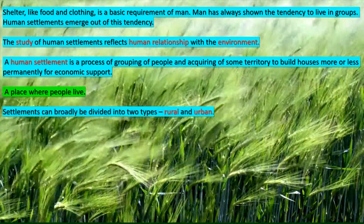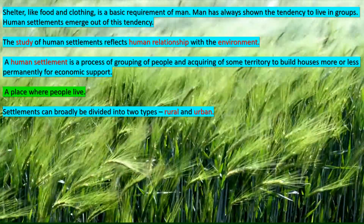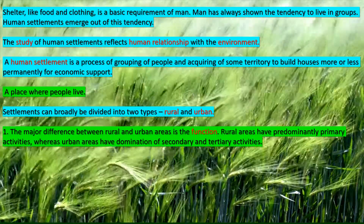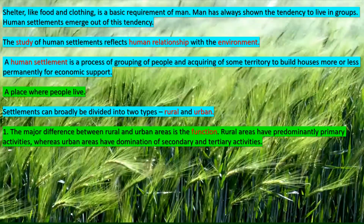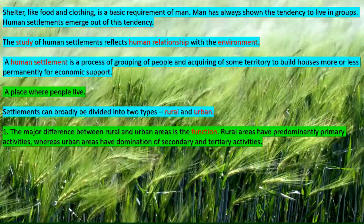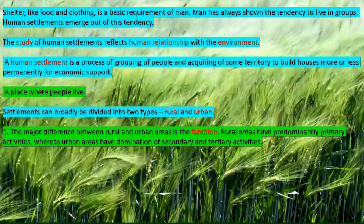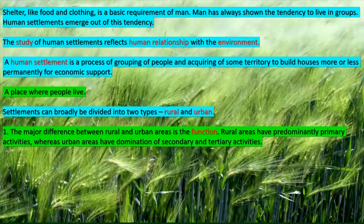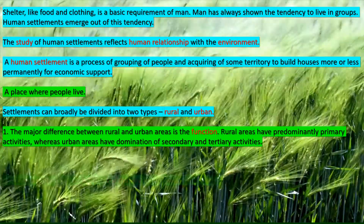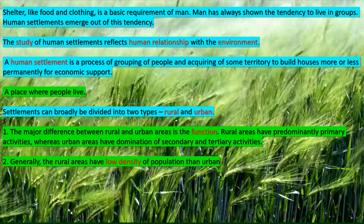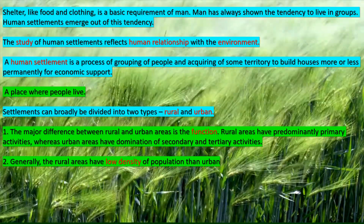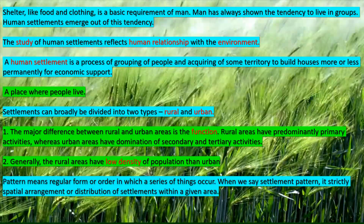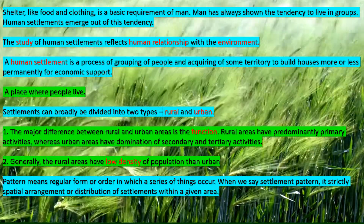Settlements can be broadly classified into two types: rural and urban. The major difference between rural and urban areas is the function. Rural areas have predominantly primary activities like agriculture, whereas urban areas have domination of secondary and tertiary activities. Generally, rural areas have lower density of population than urban areas.